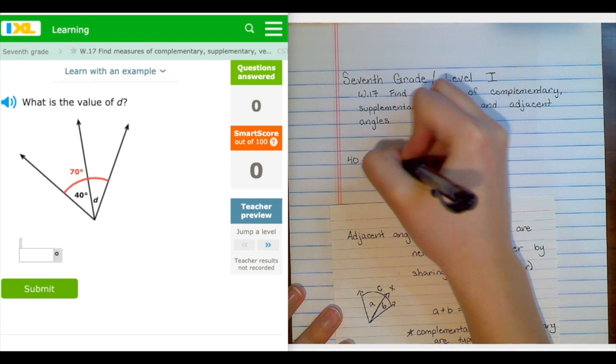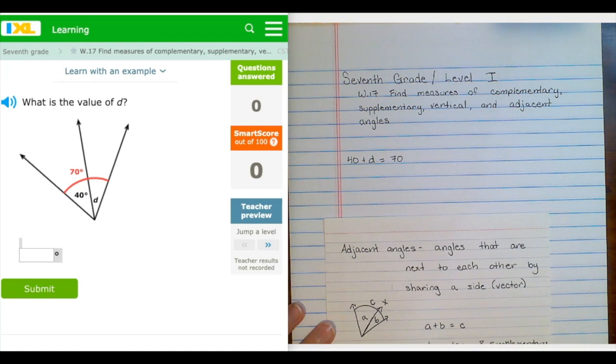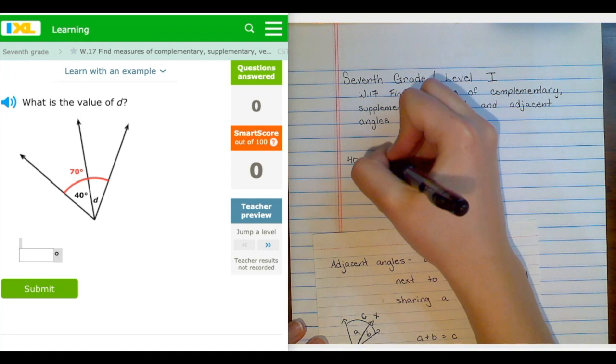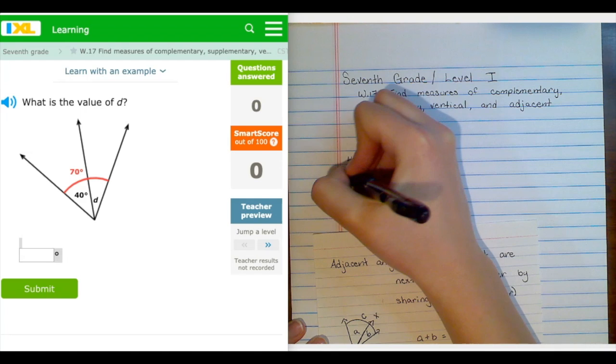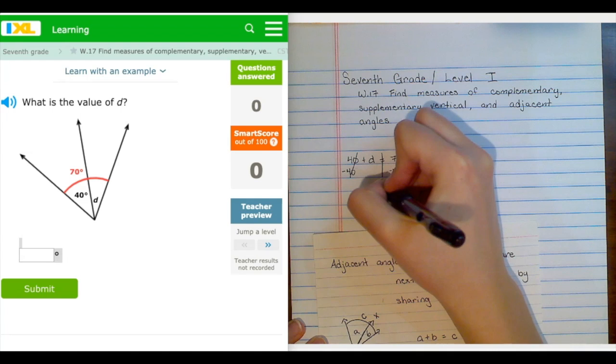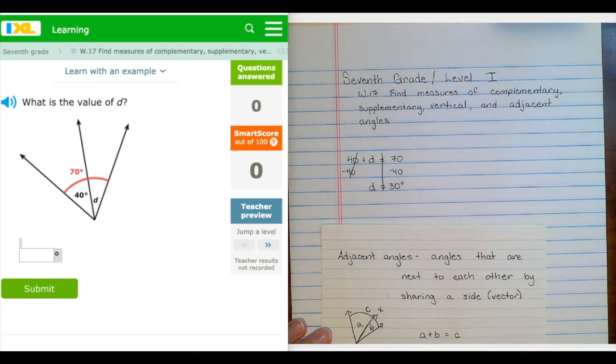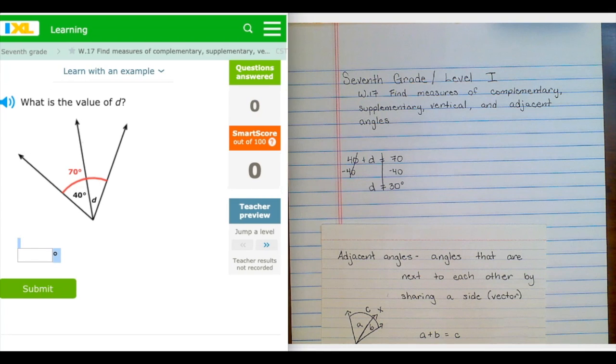So I know my two inside angles are 40 and d, and together they will equal 70. So to deal with that, to solve for d, I will simply use my multi-step equation systems, and I will subtract 40 from both sides. And d will equal 30 degrees. Not too bad. Let's move on to the next one.